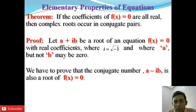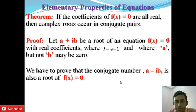For any complex number, its conjugate is obtained by substituting i with -i. For example, if 2 + 3i is a number, then 2 - 3i is its conjugate. So here we have to prove that the conjugate number a - ib is also a root of f(x) = 0.